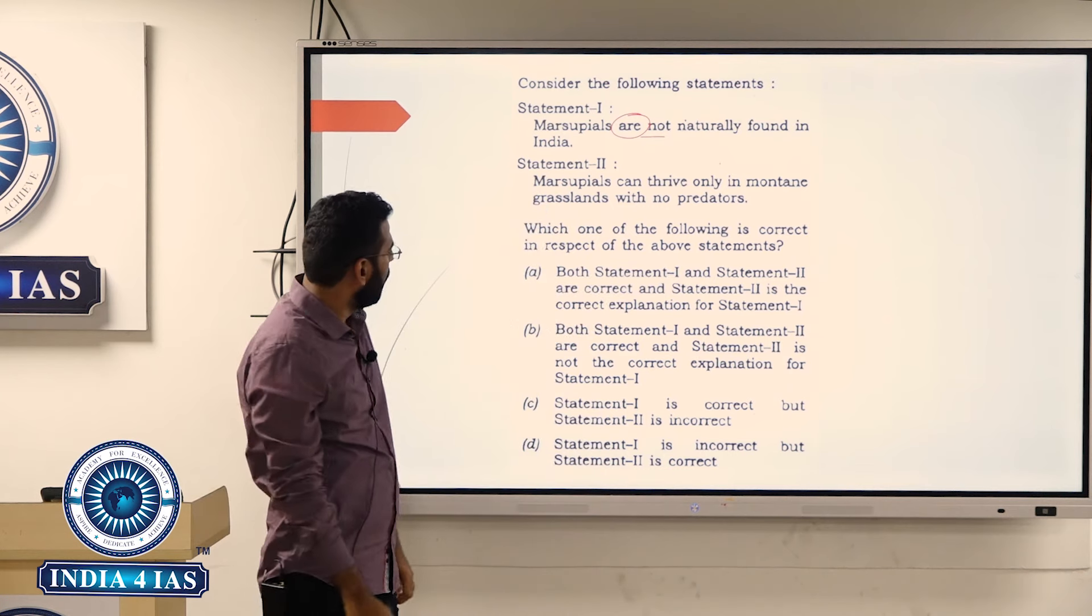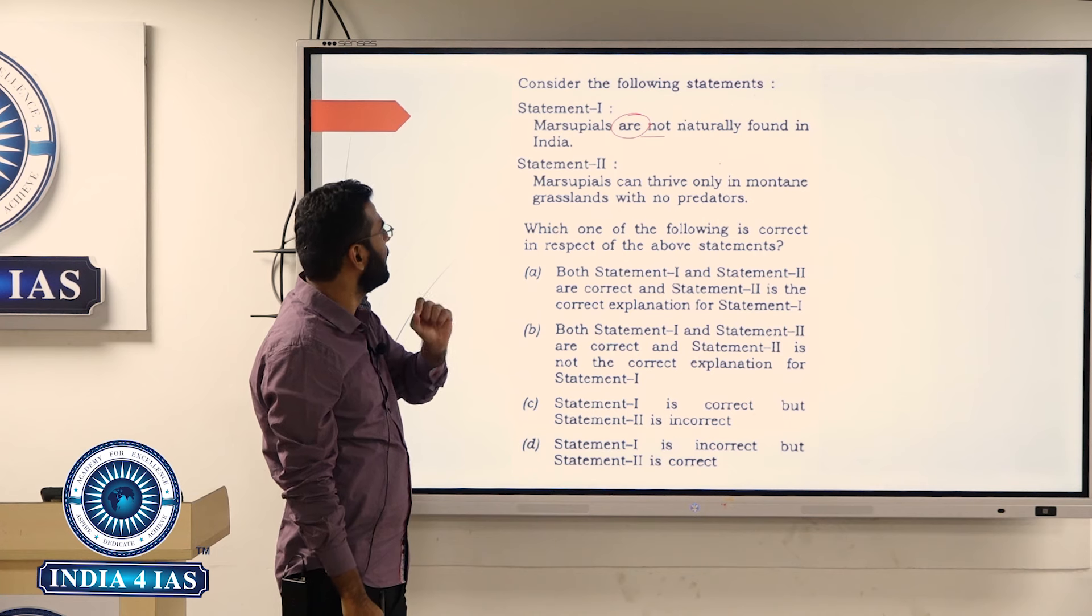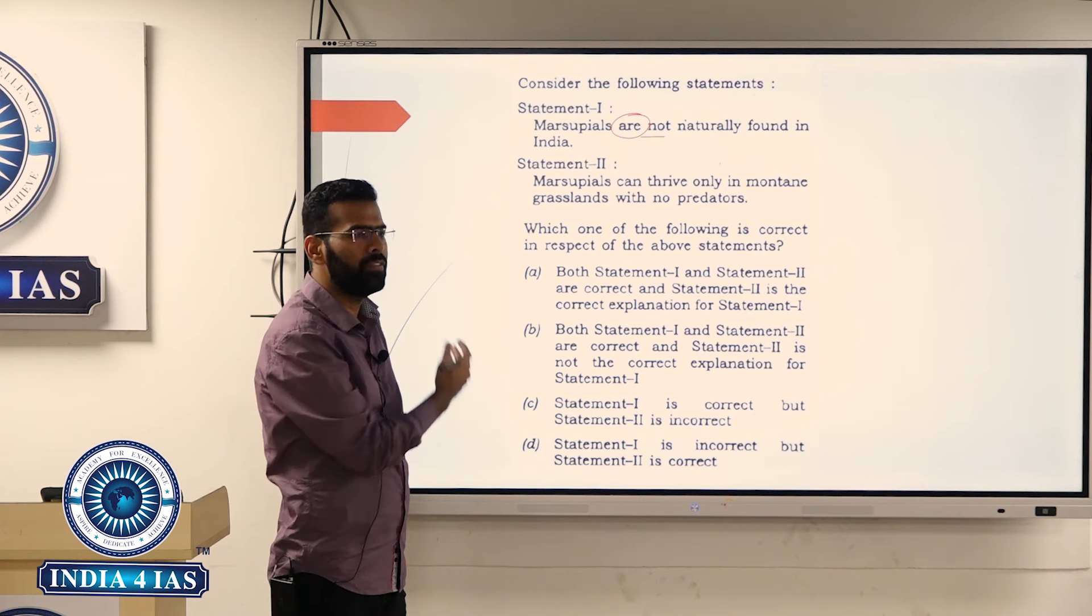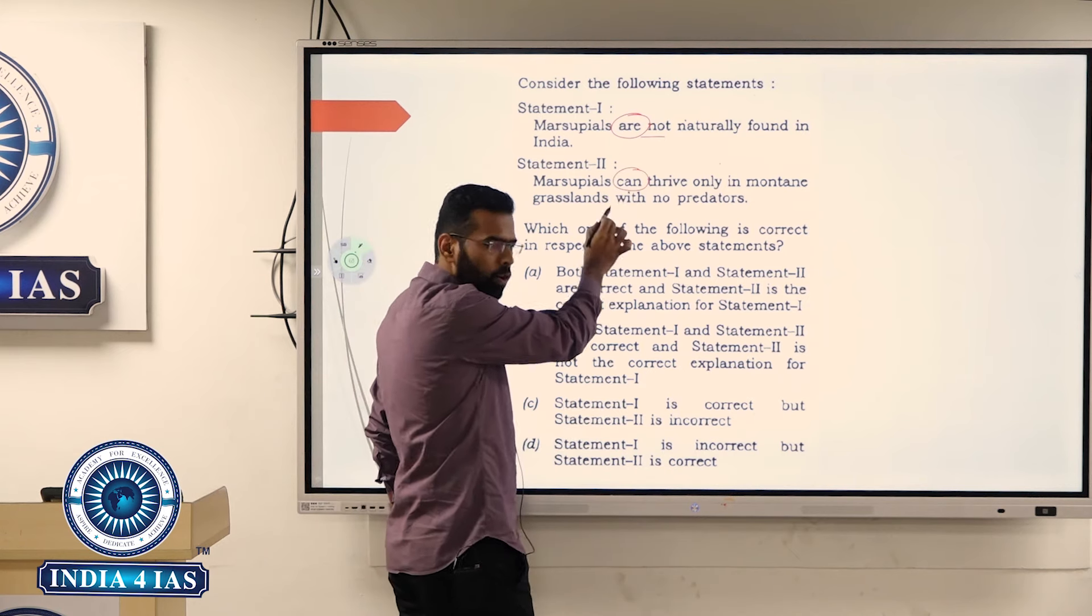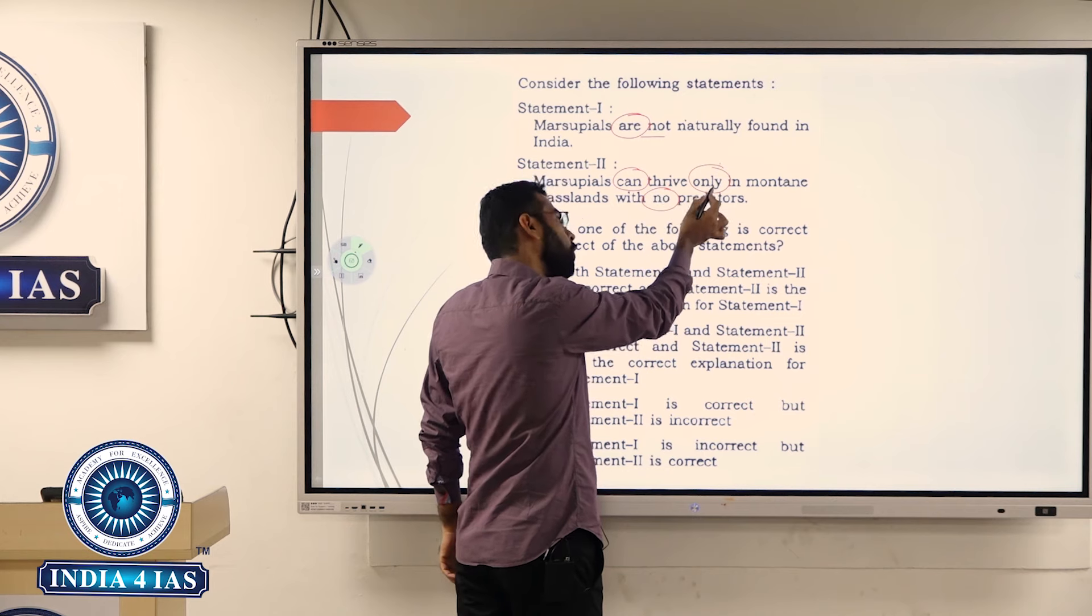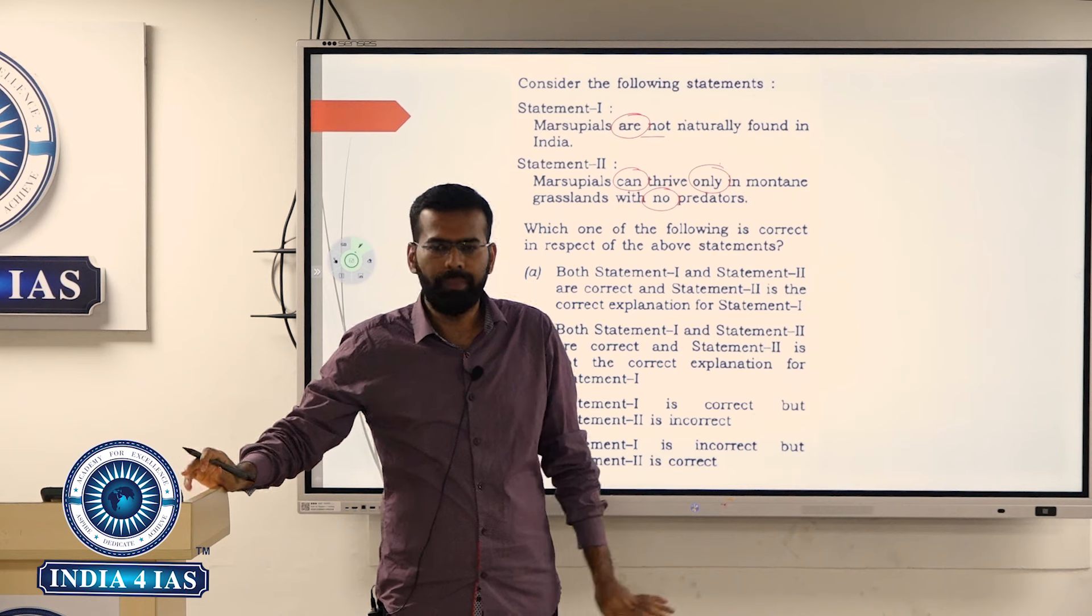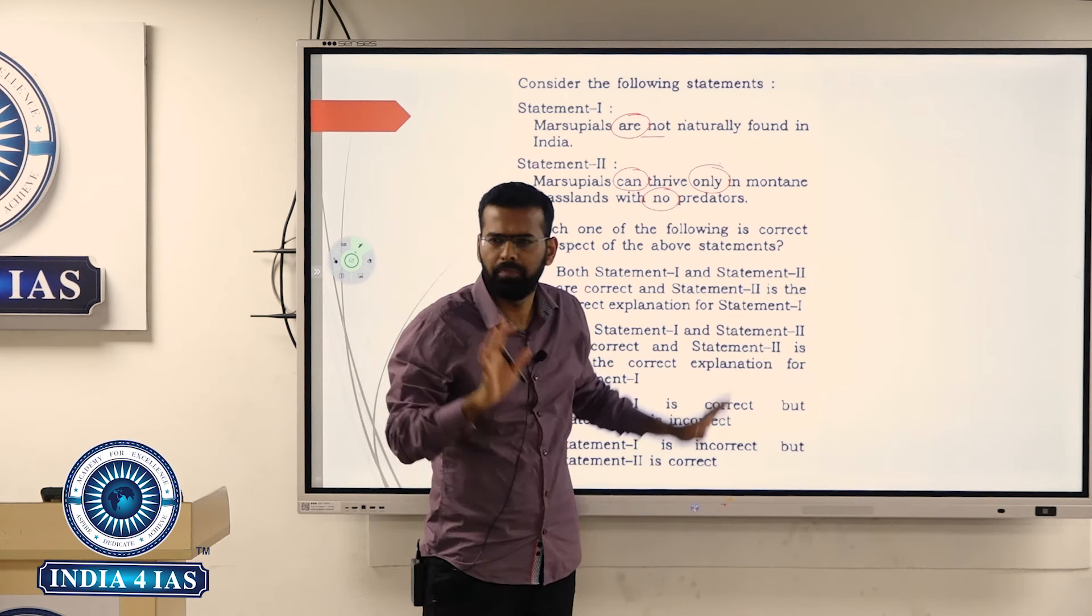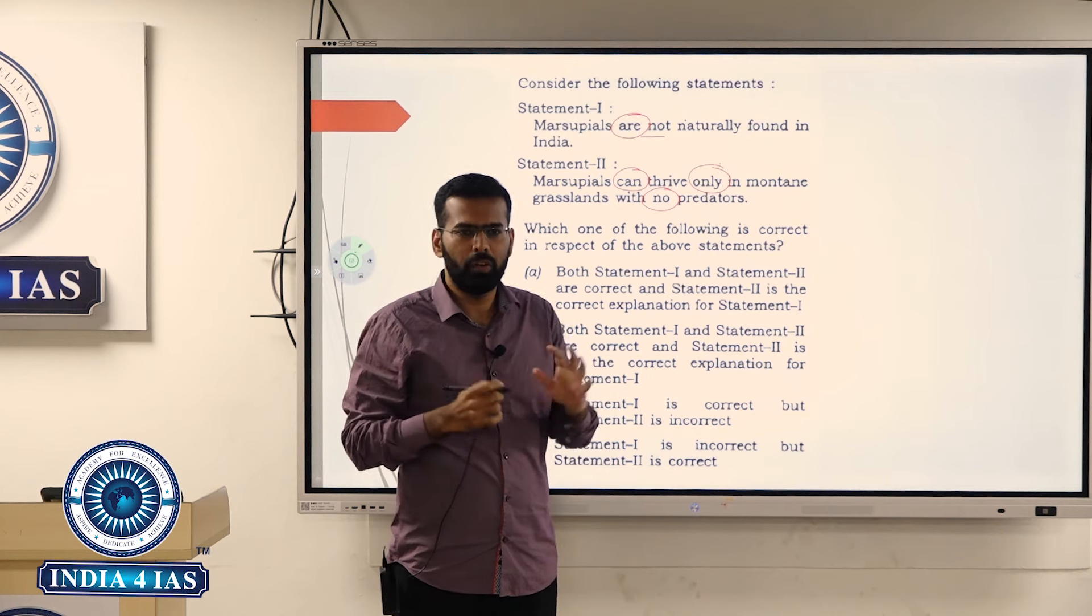Now marsupials can thrive only in mountain grasslands with no predators. What kind of statement is this? You have generalistic word, you have extreme word also. You have 'only' and 'no predators'. That means this is some kind of extreme statement. Now don't just think that okay it's an extreme statement it will be wrong.